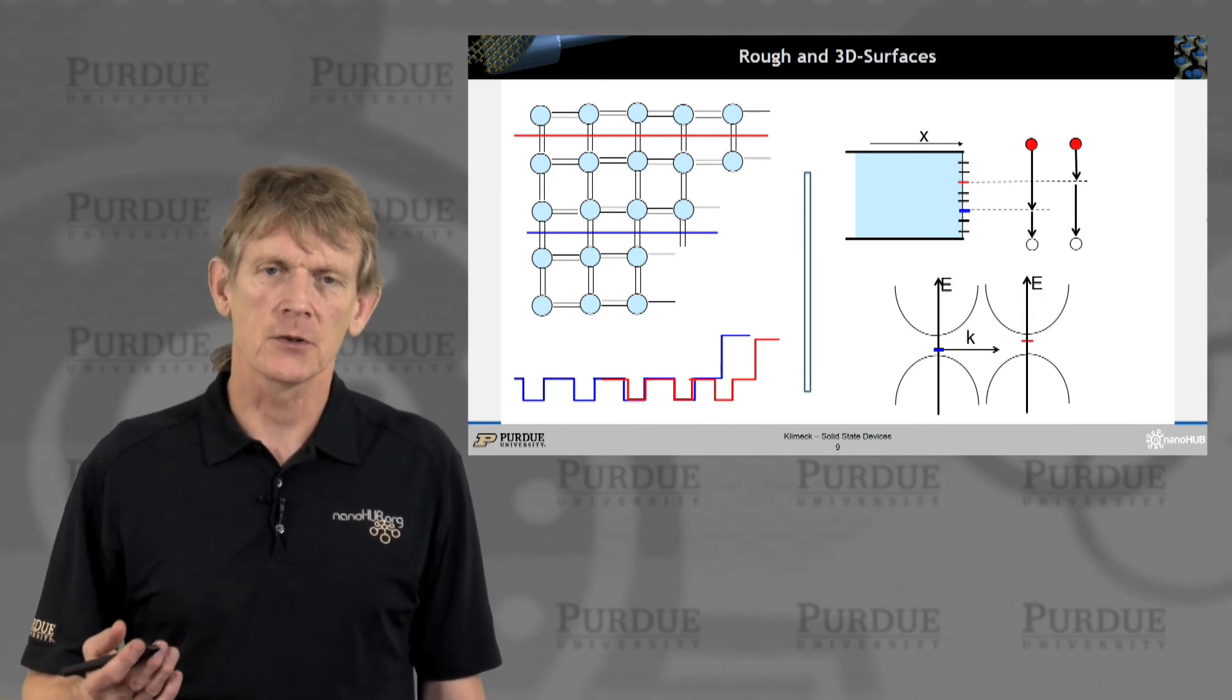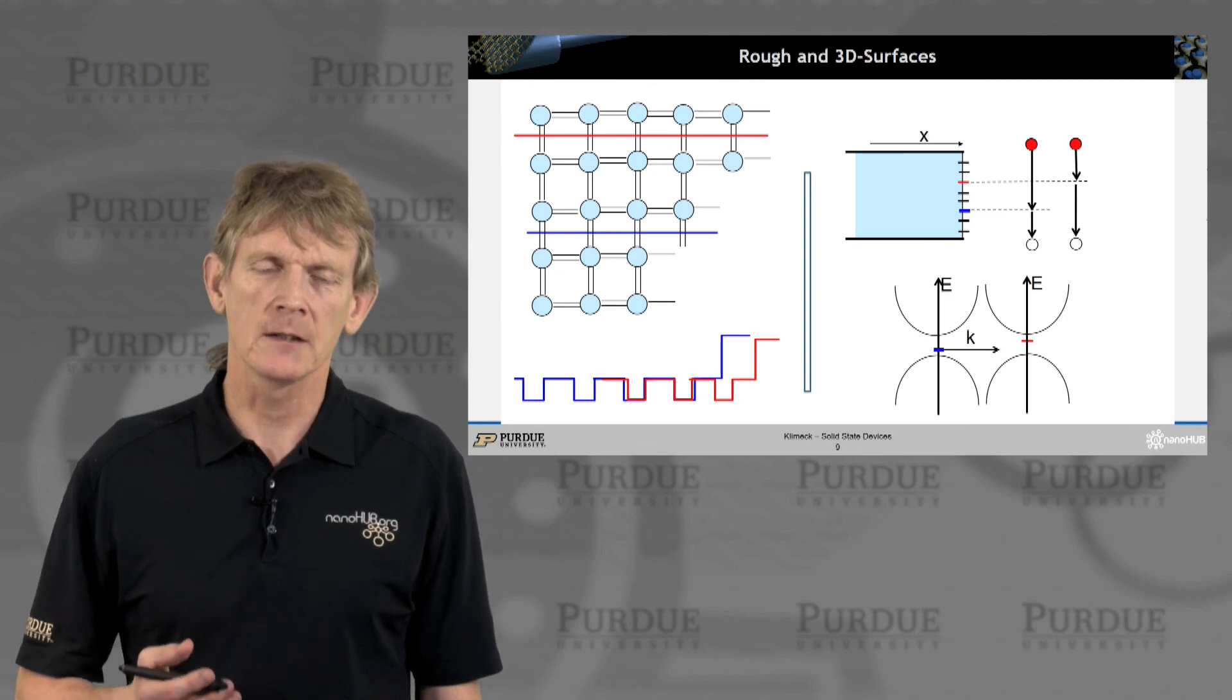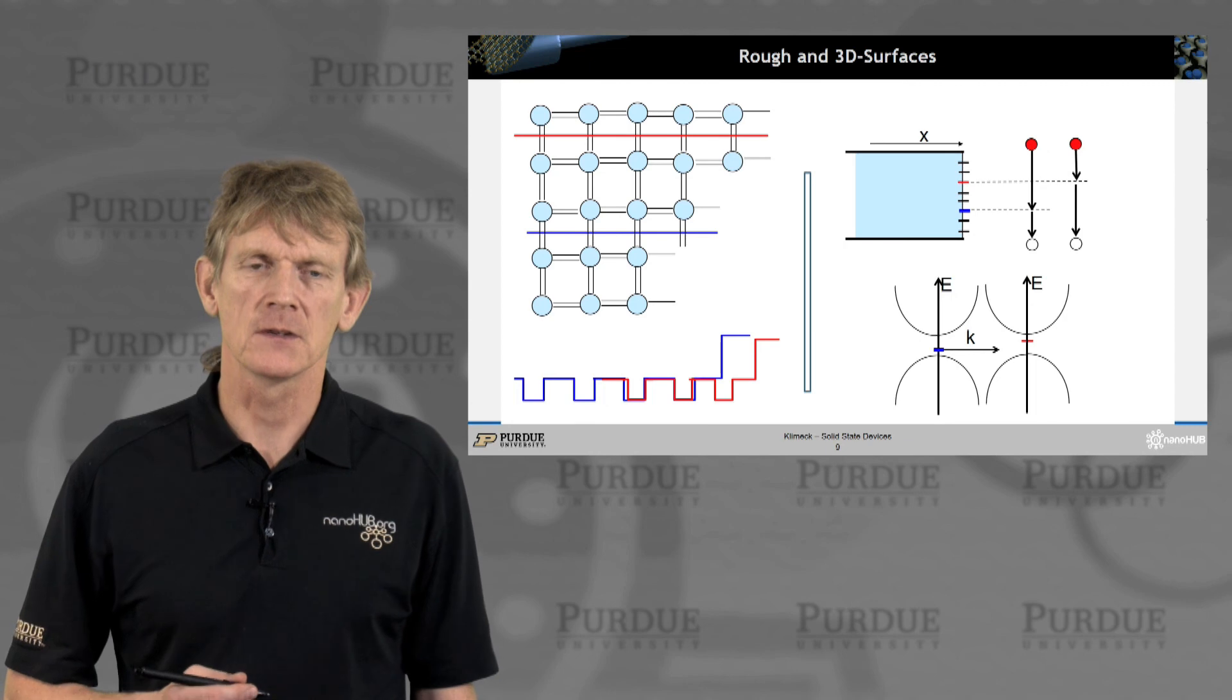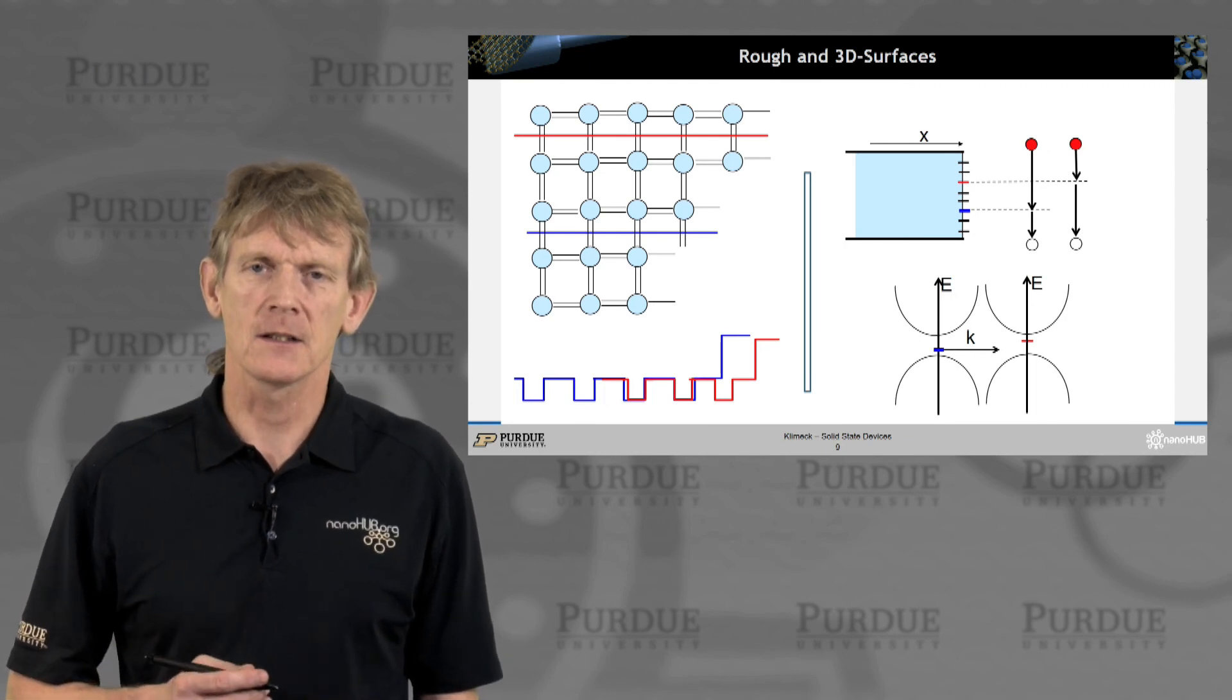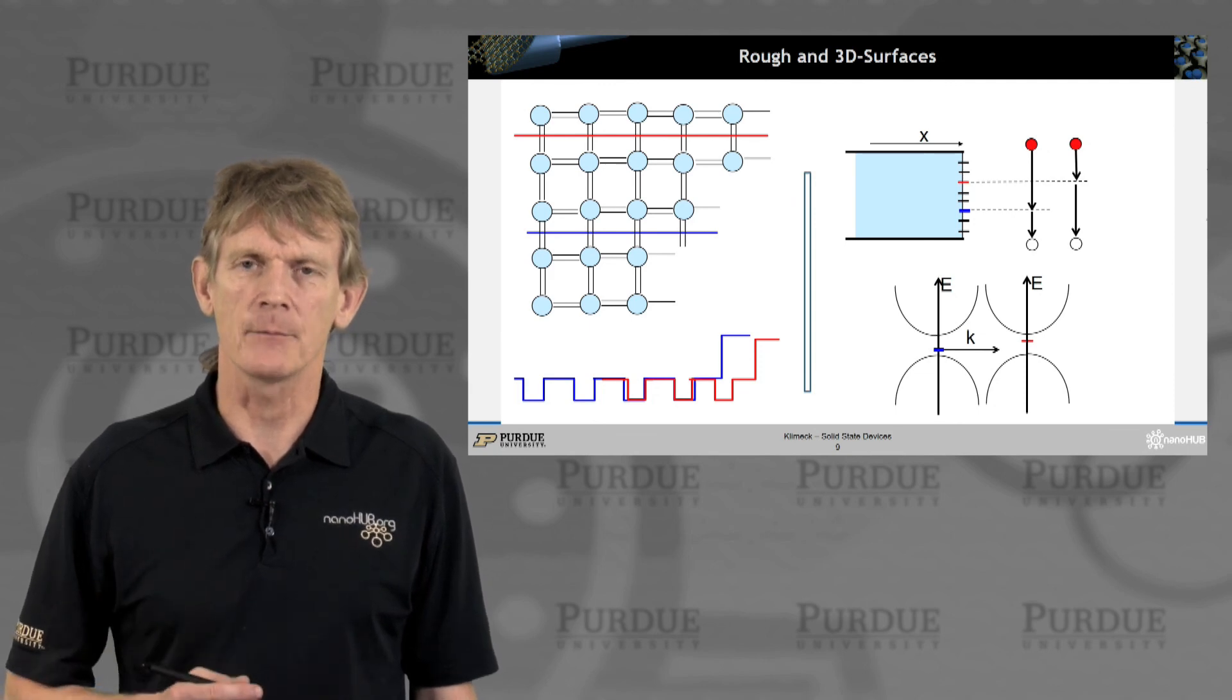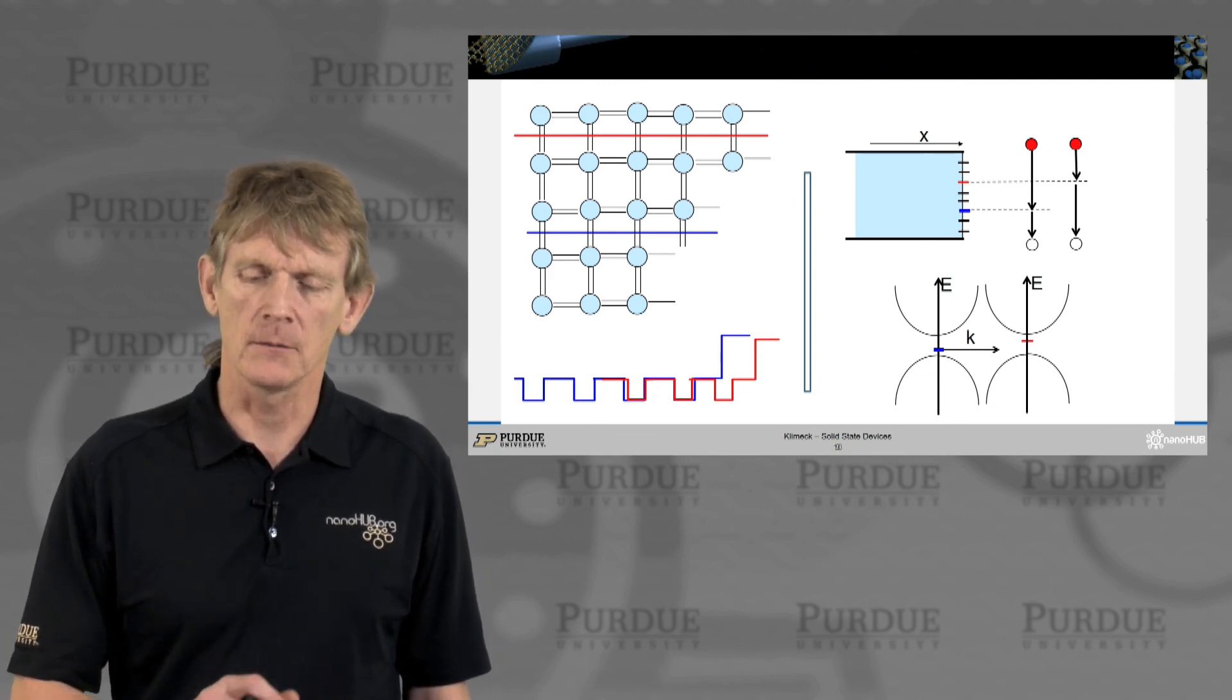If you do calculations like this in an atomistic basis, like my research group does with the NEMO software, we can literally calculate the eigenvalues at those surfaces, and these surfaces are full of states, and they typically have eigenvalues that are right throughout the gap. Lots of states available.